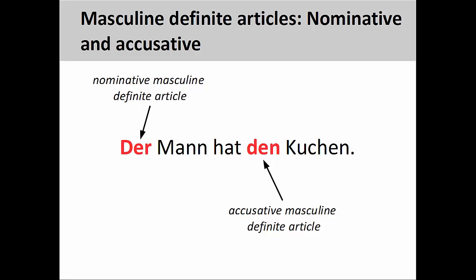As you continue your study of German, you will learn that cases can be reflected by the form of the definite article. Here, der indicates that a nominative masculine noun follows, and den indicates an accusative masculine noun follows. We will examine definite articles in a later presentation.